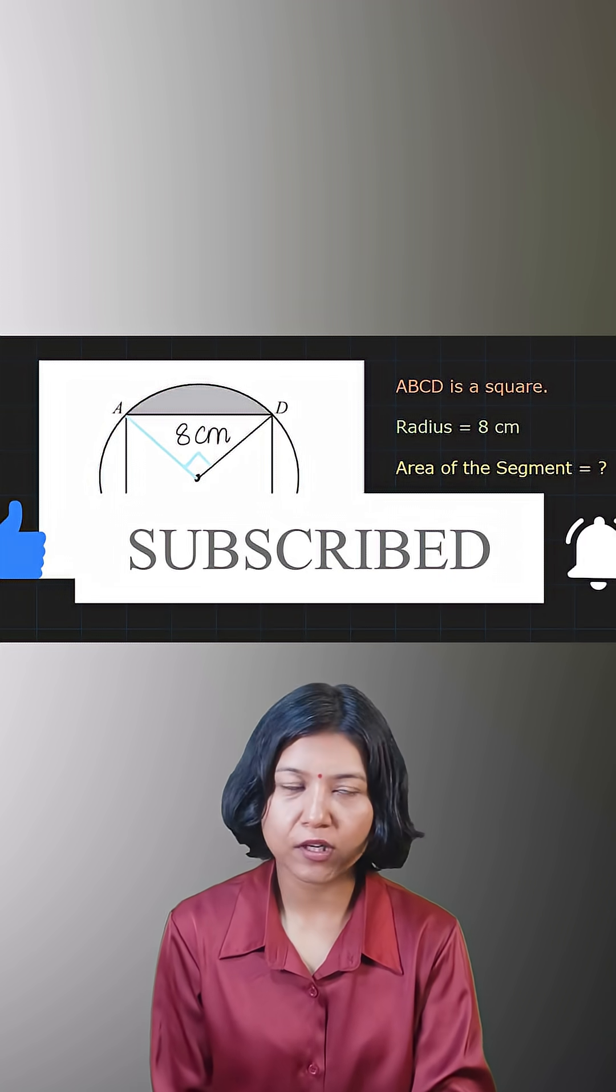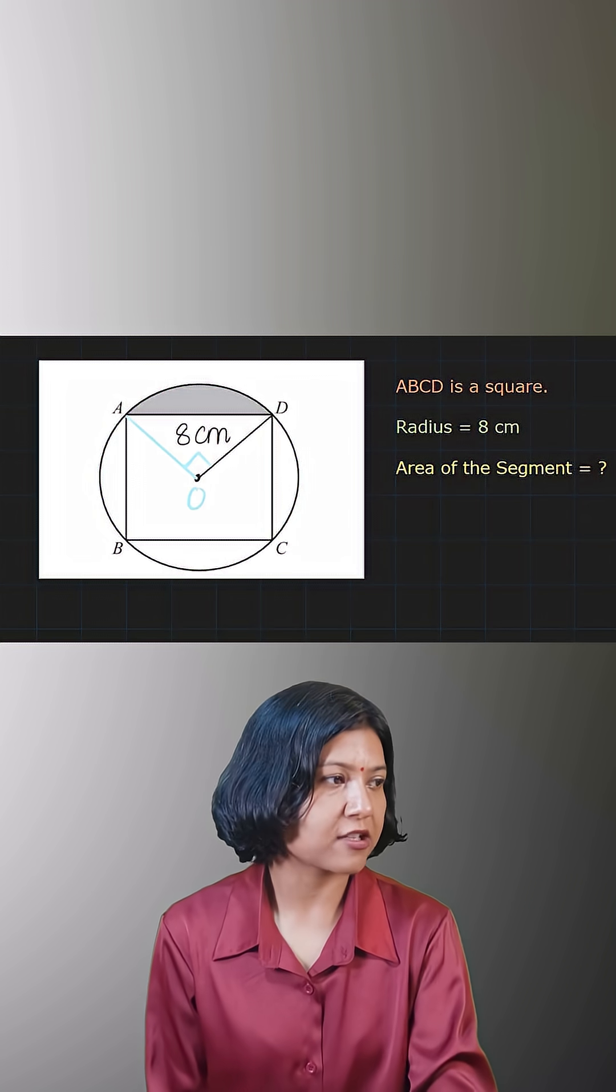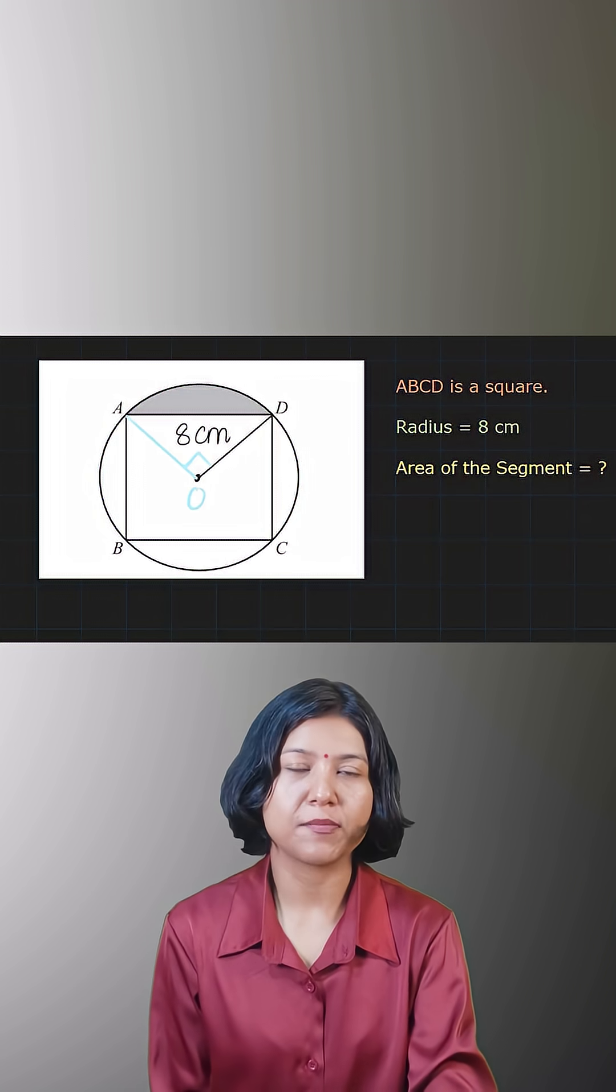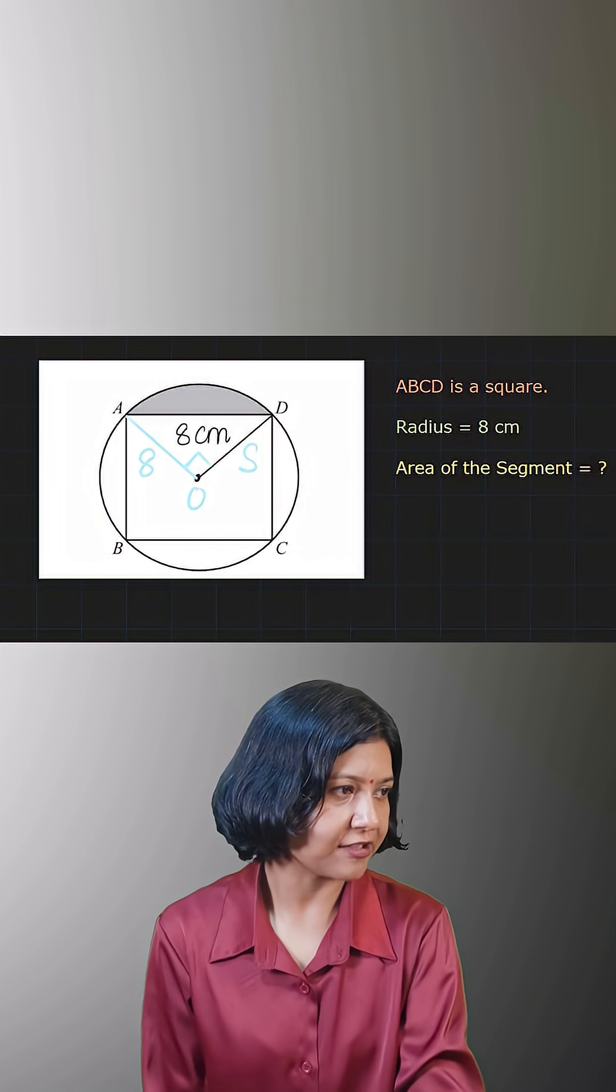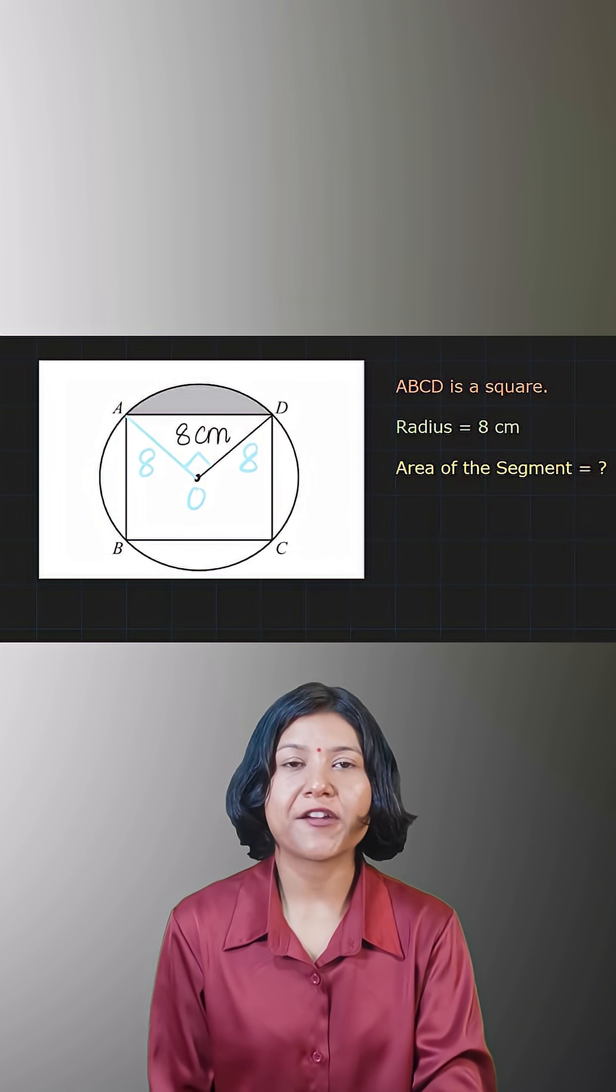And now the diagonals are also equal, so you can clearly see that both OA and OD here will be your radius, which is 8. So I'm going to write 8 here and 8 here. Next question says find the area of the segment.